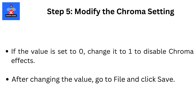Step 5: Modify the Chroma setting. If the value is set to 0, change it to 1 to disable Chroma Effects. After changing the value, go to File and click Save.